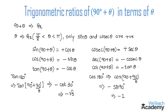To summarize: 90° + θ lies in the second quadrant, where only sine and cosecant are positive. This was a basic introduction to trigonometric ratios of 90 degrees plus theta in terms of theta. Hope you understood the concept. Do like and subscribe to vteachacademy.com. Thanks for watching, have a nice day.